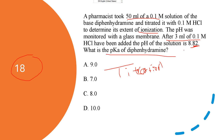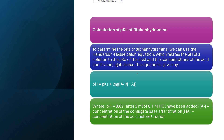What is the pKa of diphenhydramine? A: 9, B: 7, C: 8, D: 10. To determine the pKa of diphenhydramine, we can use the Henderson-Hasselbalch equation.